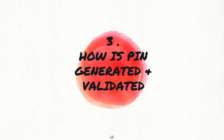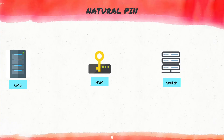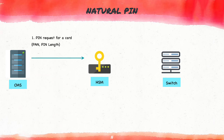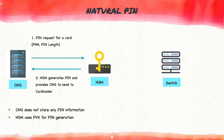Now let's see how natural PIN and customer select PIN are generated and validated. Every issuer usually maintains a CMS system, an HSM (Hardware Security Module) system, and a transaction switch. The HSM is the device or application used to generate cryptographic values, with functions to generate CVV, verify CVV, validate PIN, generate PIN, etc. Every time a card is issued, the CMS system calls the HSM with the card number and the required PIN length. The HSM generates the PIN number and sends it back to CMS to print and send to the customer. It is not usually stored.